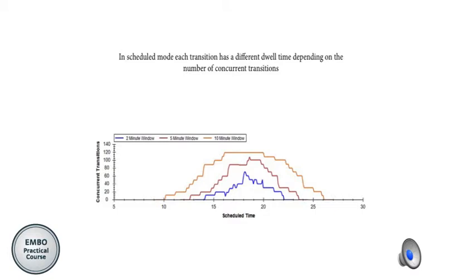Skyline has a tool where you can see how many transitions are co-eluting at any particular time, which is very useful. Because we set a window of time rather than a single point, depending on the size of this window we can have more or fewer concurrent transitions. For example, with a two-minute window the maximum concurrent transitions is 60, which allows a decent cycle time. If the window is wider, there will be more concurrent transitions at a given time. This is something to check when preparing your method in scheduled mode — if the window is too wide and you have too many concurrent transitions in one region, you may need to split the experiment into two methods or reduce the window size.